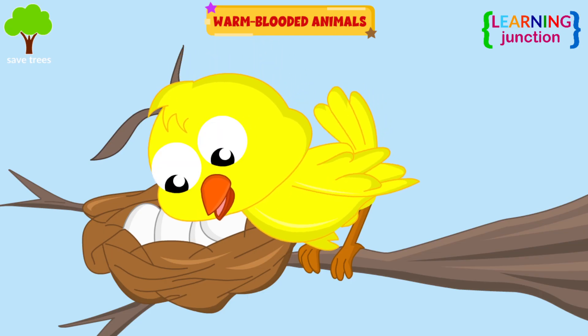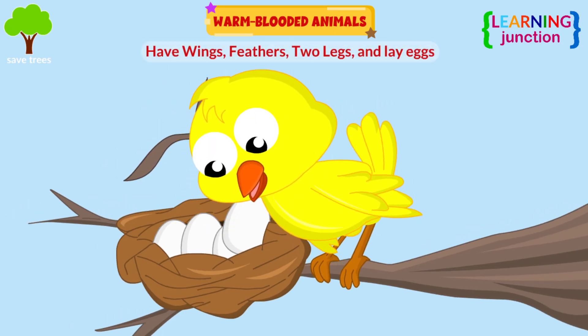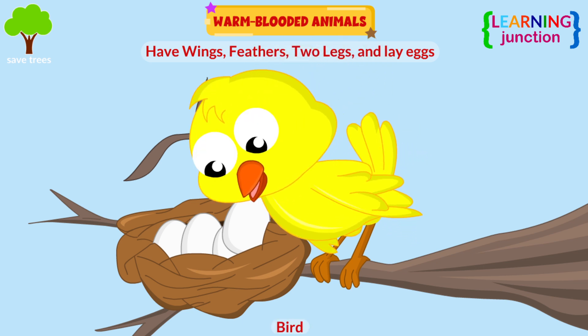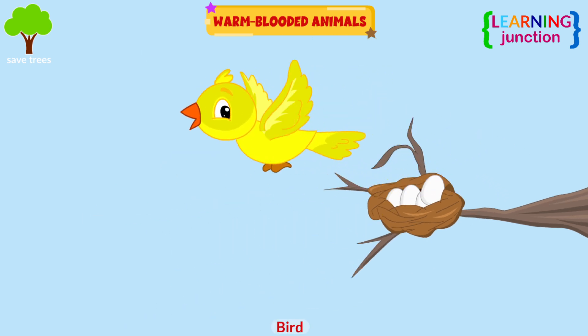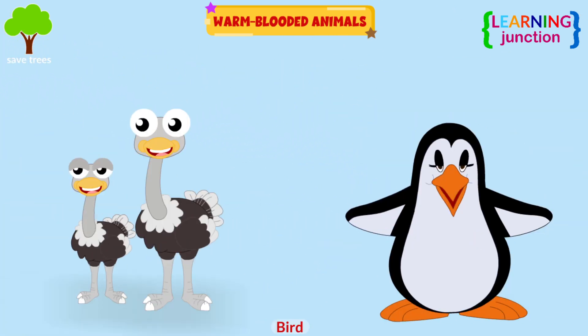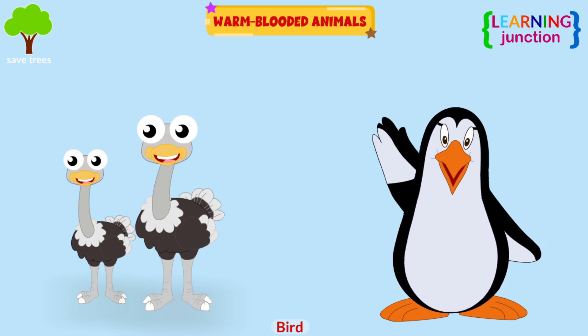Animals which live mostly in air, have feathers and wings, and lay eggs are called birds. All birds have wings, but some birds, like ostriches and penguins, cannot fly.